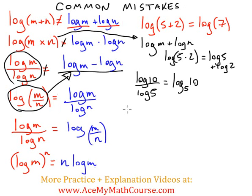But what if I have log of 10 divided by 5? Then that, in fact, is log 10 minus log 5. That works out.